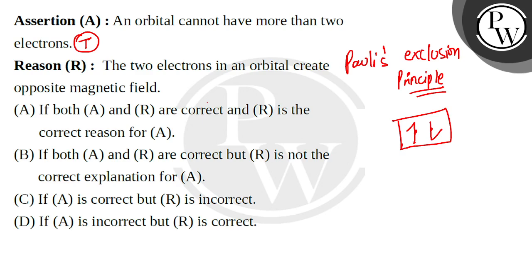It means that an orbital cannot have more than two electrons. So, the first statement or assertion is true. The reason is that two electrons in an orbital create opposite magnetic fields. It is absolutely true.